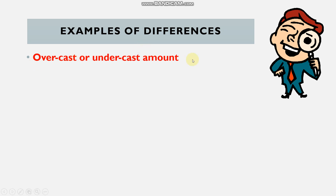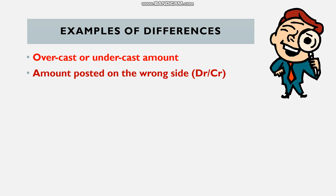Sometimes they'll say the amount on the statement is incorrect — that means our books are correct and their figure of R4,000 is understated (should be R5,000). Always keep ethics in mind: even if their amount is less than ours, don't stay quiet — you still need to do the reconciliation and identify the differences. The next type of difference is an amount posted on the wrong side of the account.